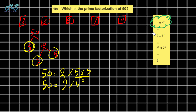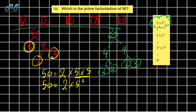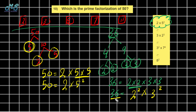Another example: the prime factorization of 36. 36 equals 4 times 9, and 4 equals 2 times 2, and 9 equals 3 times 3. The prime factors are 2, 2, 3, 3. Written in exponential form: 36 equals 2 squared times 3 squared. This exponential form can be found using prime factorization for any number.